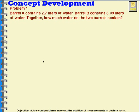In this lesson, you're going to have several word problems. We're going to do two of them. The first one says: Barrel A contains 2 and 7 tenths liters of water. Barrel B contains 3 and 9 hundredths liters of water. Together, how much water do the two barrels contain?